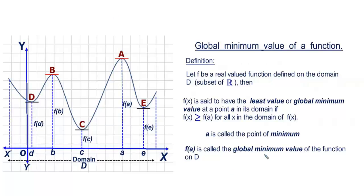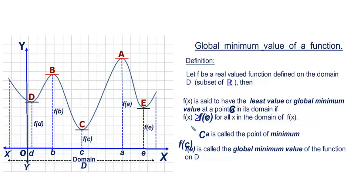However, in the figure I was using the letter C and f(C). Let us make a small change here — replacing A with C and f(a) with f(C), so that f(x) is greater than or equal to f(C). Therefore, we have seen that f(x), the ordinates of other points on the graph, are greater than f(C). Therefore, we call f(C) as the global minimum value and C is called the point of minimum.